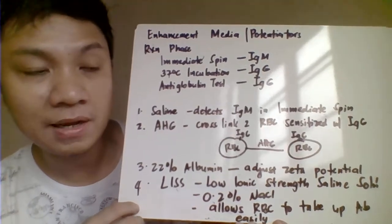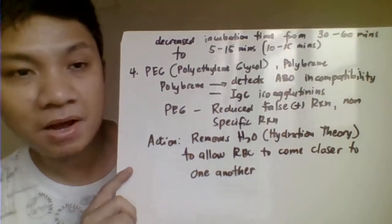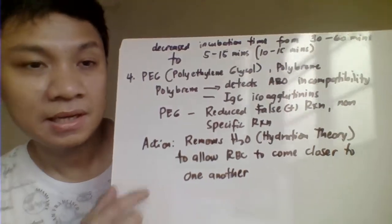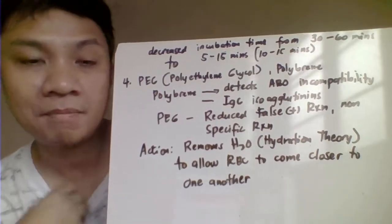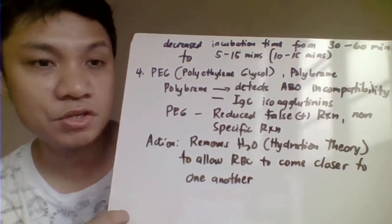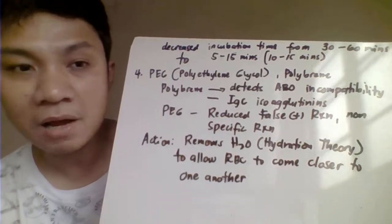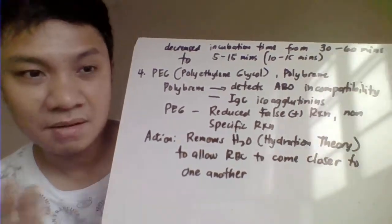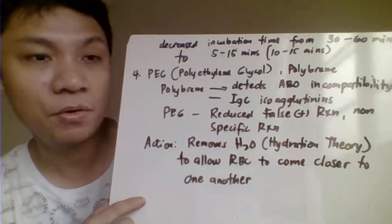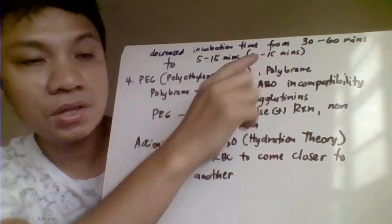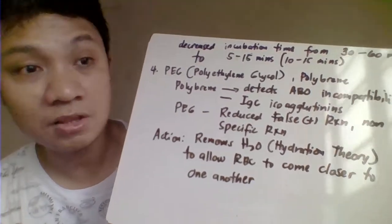Another benefit of LISS is that it decreases incubation time. Without potentiators, incubation during cross-matching can take 30 to 60 minutes. With addition of LISS, incubation time is reduced to only 5 to 15 minutes (some references say 10 to 15 minutes), giving faster test results and faster interpretation.